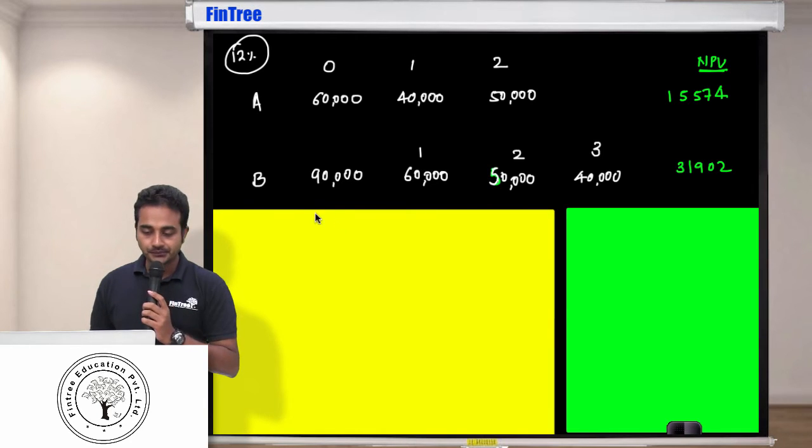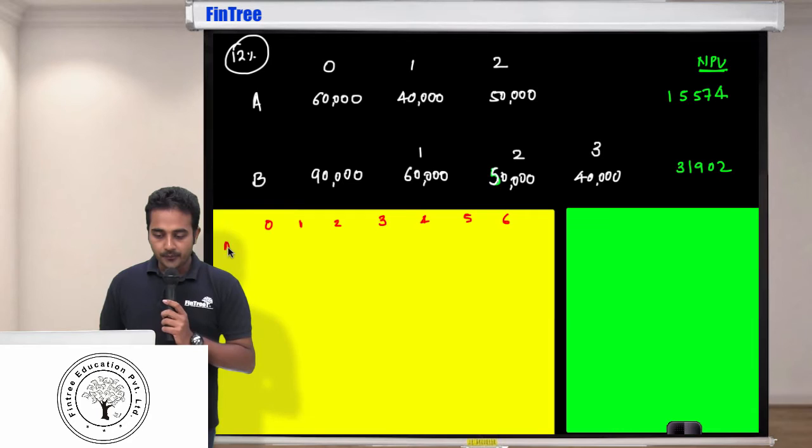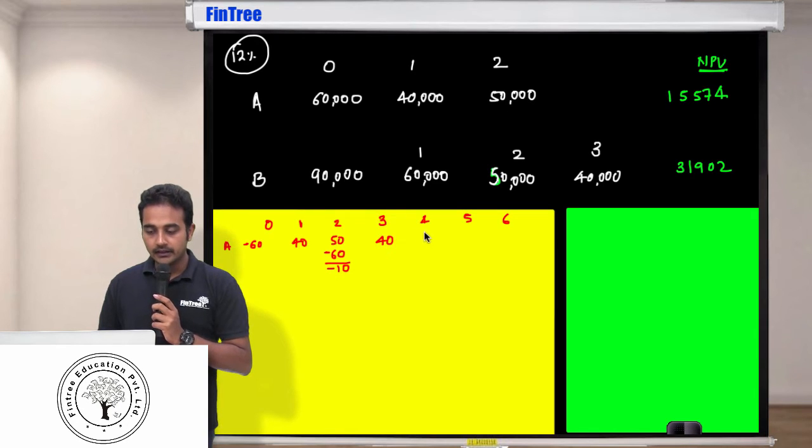I'm going to solve this here now. This is year zero, one, two, three, four, five, and six. Project A at time zero your investment was 60,000. At time one you received 40,000, then at time two you invest 50 but again you will have to invest 60, so your net cash flow here will become minus 10. Then you would receive 40, then you would receive 50 minus 60, minus 10, 40, and 50.